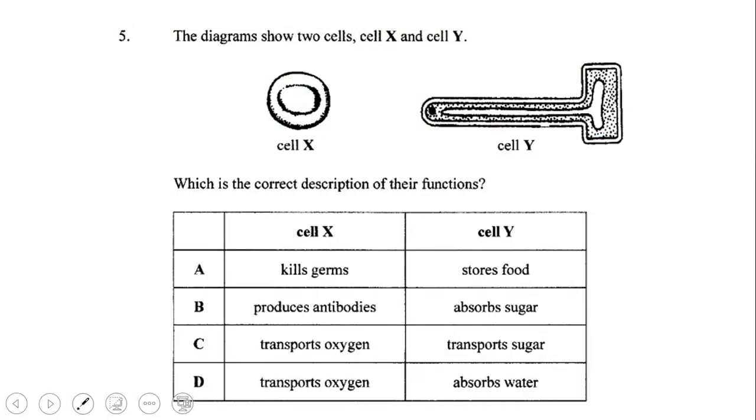Let's consider question five. Based on the definitions that were given, what is the answer to question five? Is it A, kills germs and stores food? The answer is no. Is it B, produces antibodies and absorbs sugar? The answer is no. Is it C, transports oxygen and transports sugar? Or is it D, transports oxygen and absorbs water? The answer is yes. D is the correct answer to this question. Thank you.